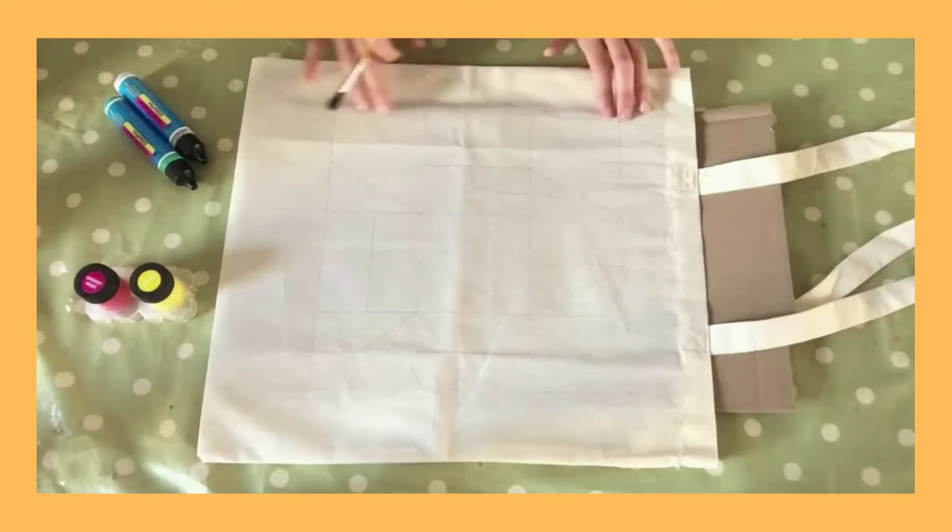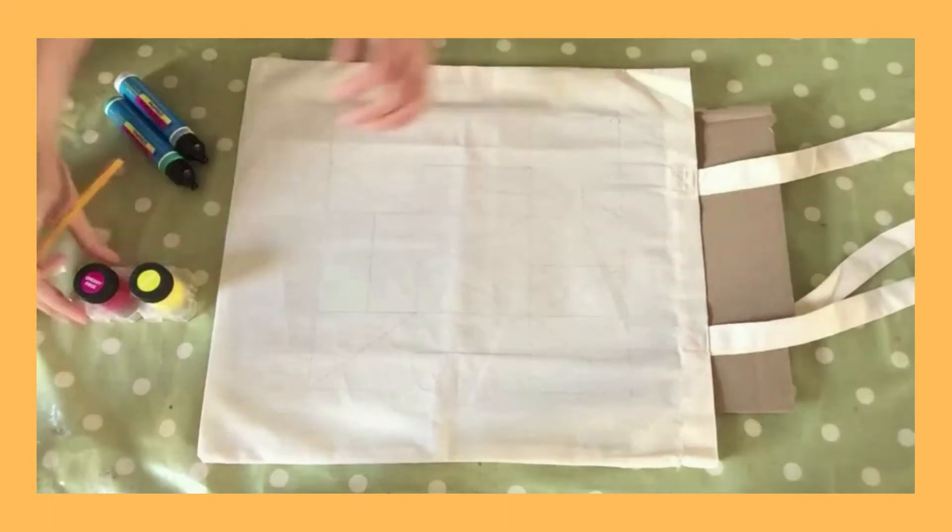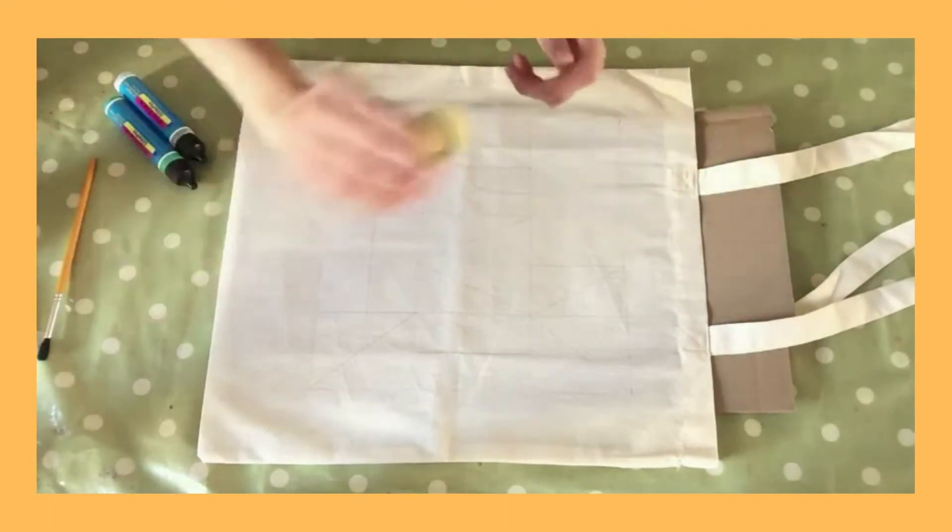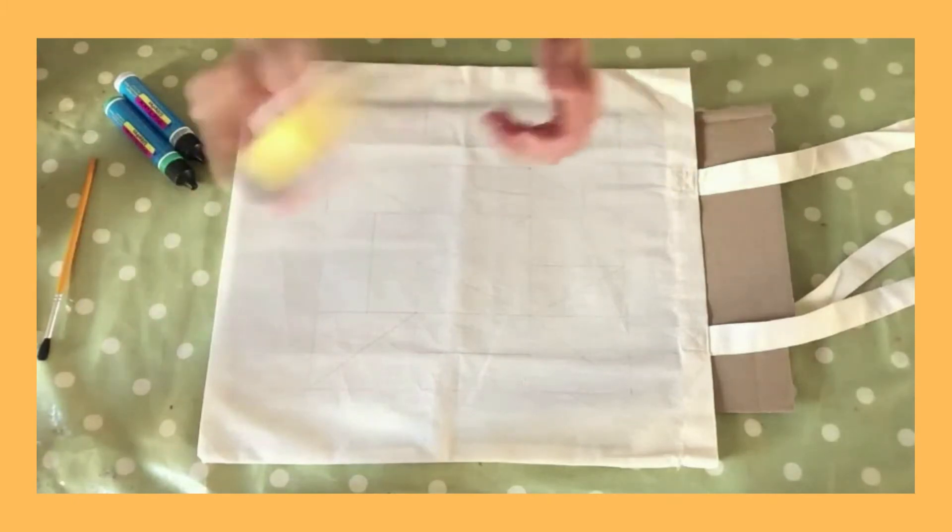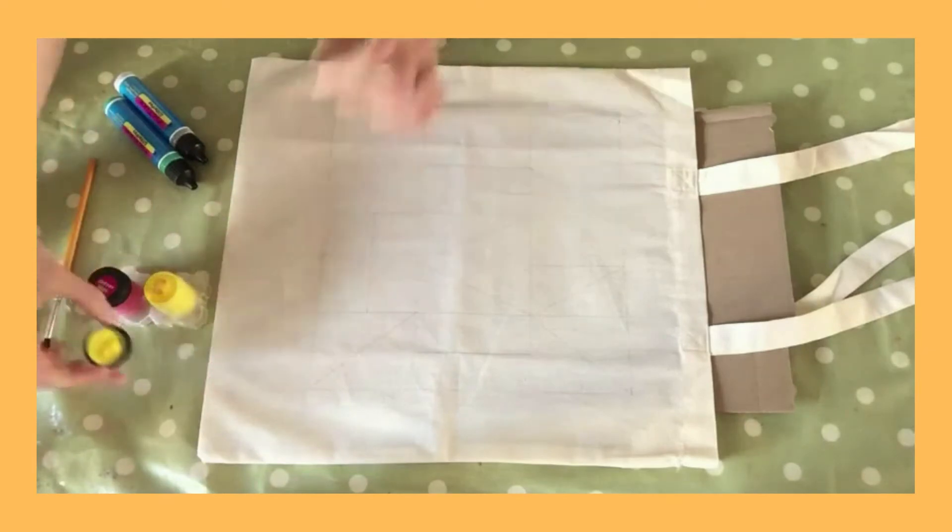So make sure that the cardboard is covering all of the areas from underneath that you want to paint, and if you're using the fabric paints first of all give them a really good shake and find your paintbrush. I'm going to use the yellow first I think.